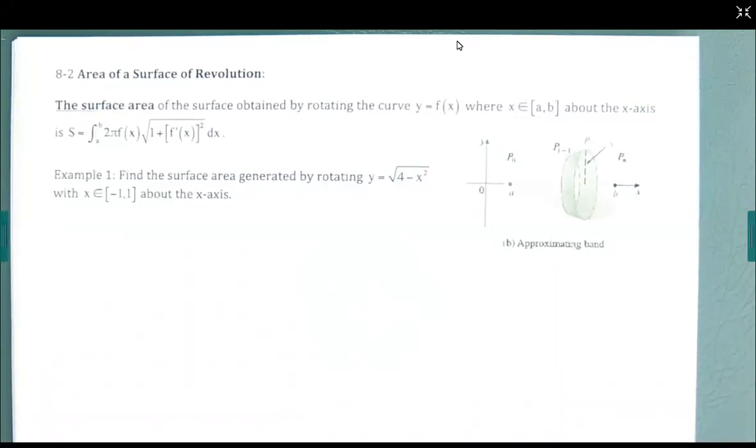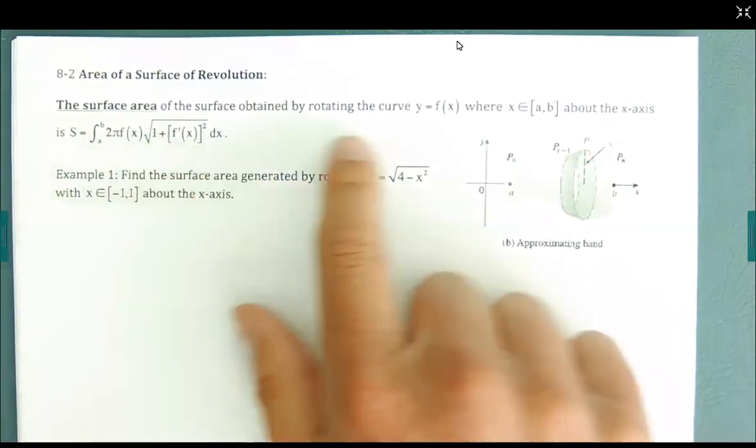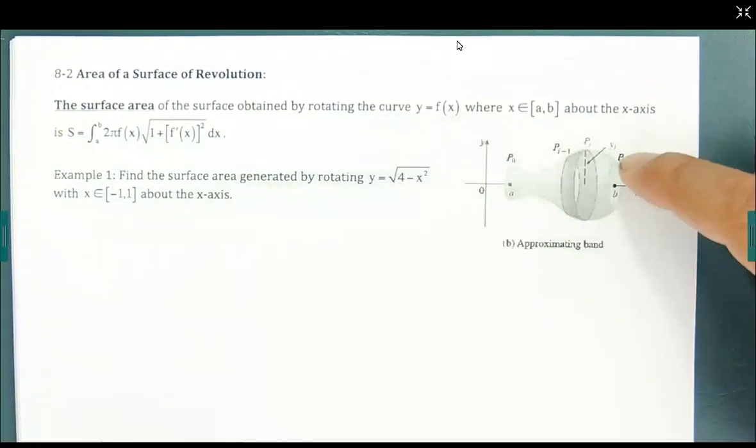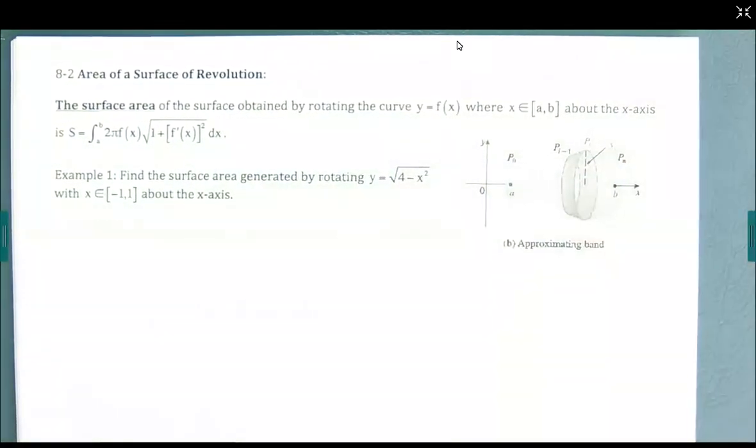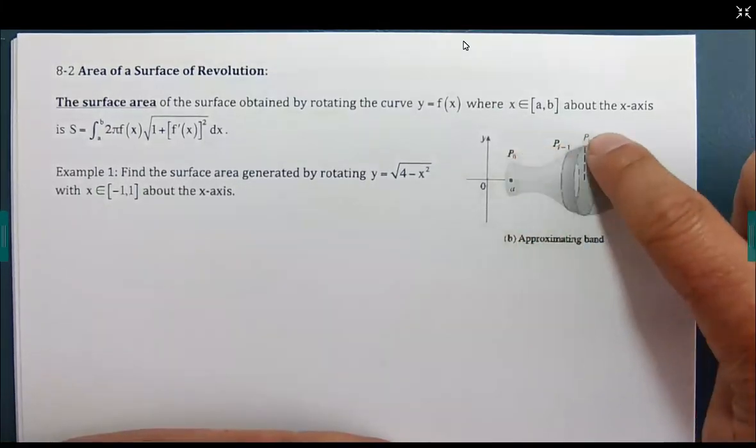Welcome back. We are to the second section in Chapter 8 where we are going to be taking a function, f of x, and we're going to whip it around the x-axis. Unlike the volume of revolution that we've done in the past, let me adjust the light here, and we're going to take this function here.